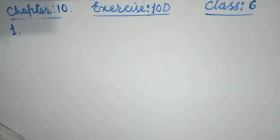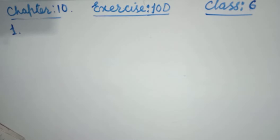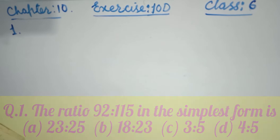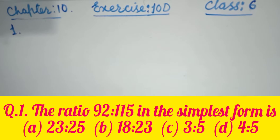In Exercise 10D, all questions are objective type, meaning each question carries four options — A, B, C, or D. We have to solve the question first and then match the answer to the correct option.